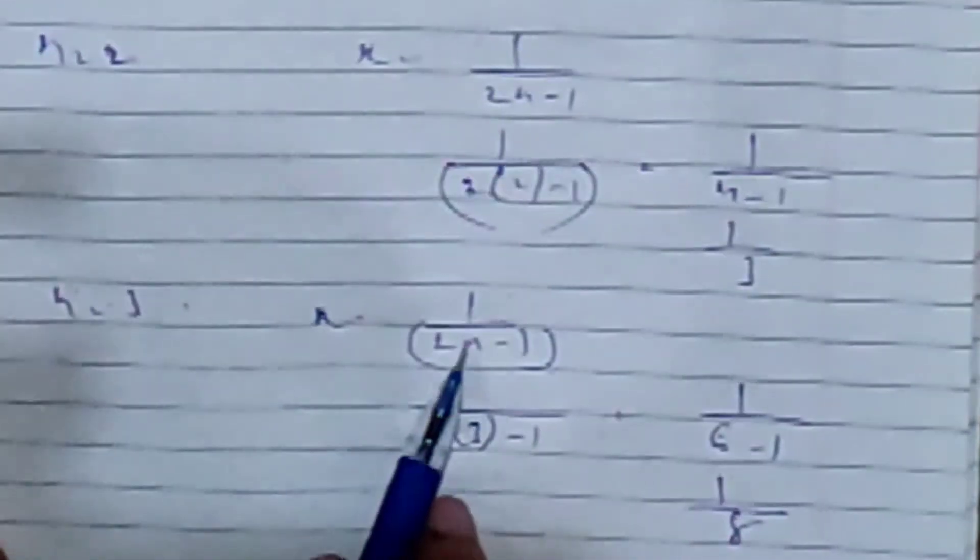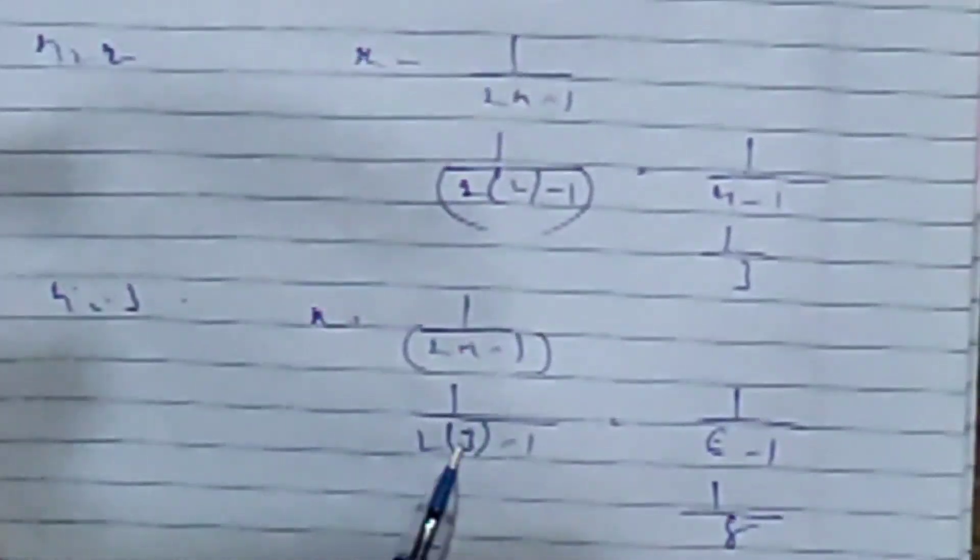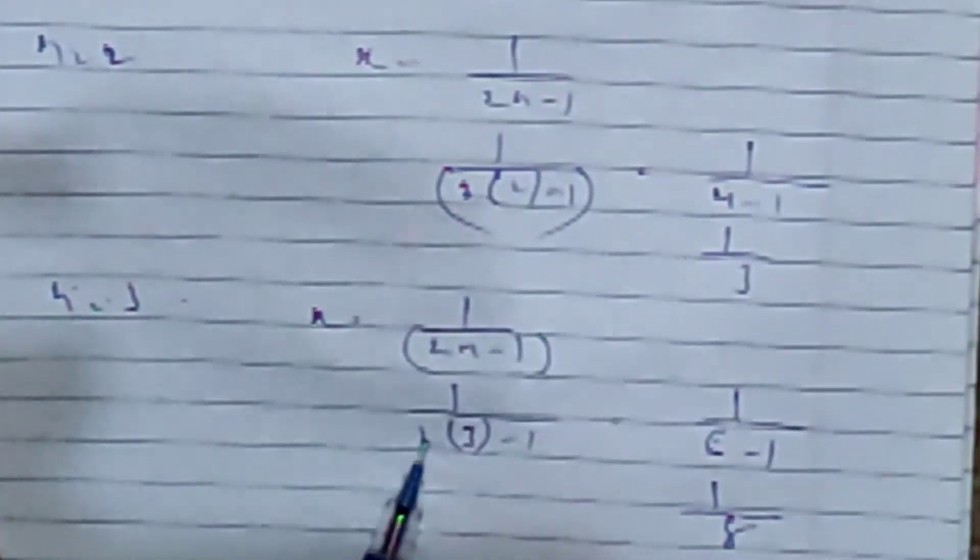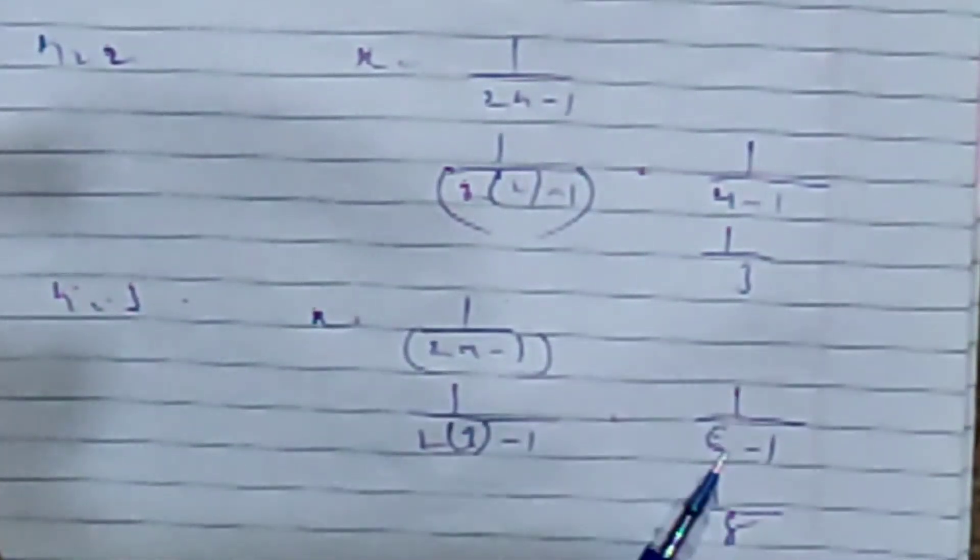Now see n is equal to 2. X is equal to 1 by 2n minus 1, that's 1 by 3. N is equal to 3: x is equal to 1 by 2 times 3 minus 1, we put 3 to get 6 minus 1, 1 by 5.